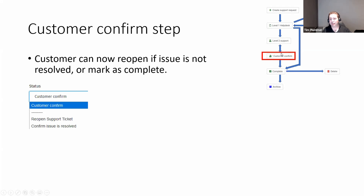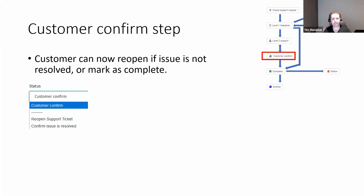When the customer receives it, they have two options: reopen the support ticket, which sends it back to level two support, or confirm the issue is resolved, which sends it to the complete state. Once it gets to the complete state, anyone can see all the information filled out on the form. The level two support person can delete or archive it, and you'd also note features like version control, which is a standard feature of articles, showing exactly who did what and when.